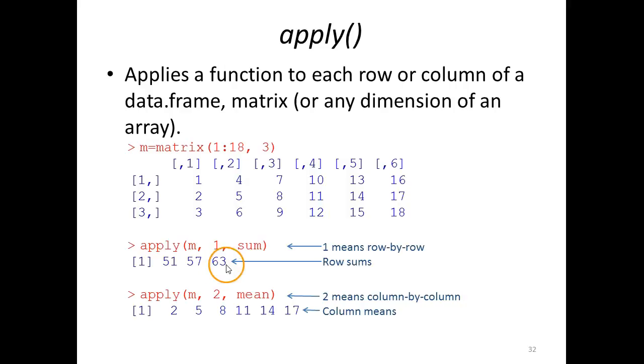Then the third argument is the command that you want to apply, in this case sum. We get 51, 57, 63, which is the sum of the numbers in each row. Here instead we want to apply the mean command and do it column-wise, and we get a vector in return containing the mean values of each column: 2, 5, 8, and so forth.